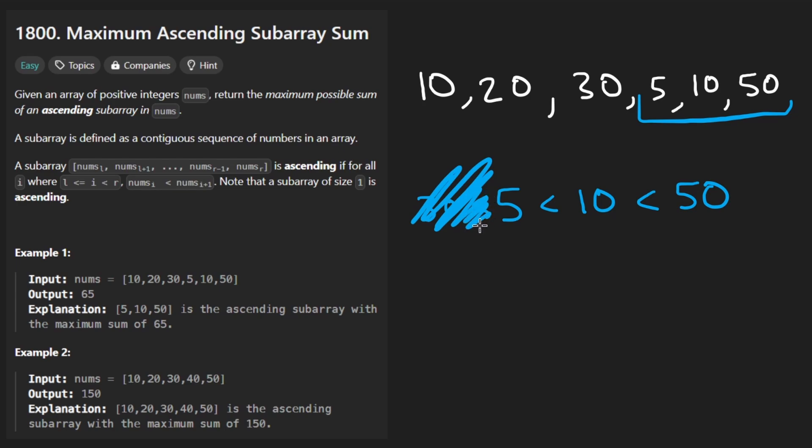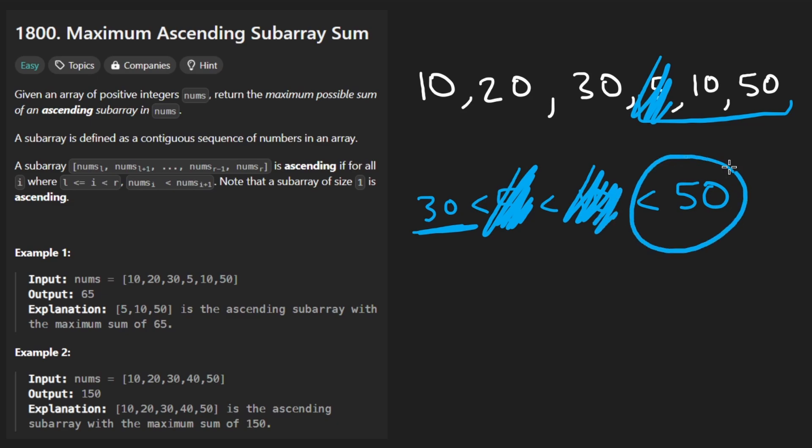I mean, I guess we could include the 30 if we wanted to, but in that case, we couldn't include the next element. And if we can't include the next element, then we kind of broke the contiguous part of this. So even though you could get rid of these two elements and say, well, 50 is bigger than 30. Well, now it's not contiguous anymore. So you get rid of all of these and then you find, okay, well, maybe the previous elements before 30.